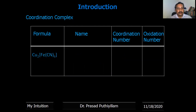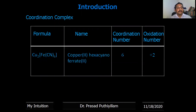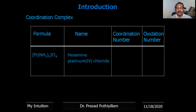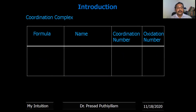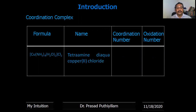Another example: [Pt(NH₃)₆]Cl₄, hexamine platinum(IV) chloride, with coordination number six and oxidation number four — the oxidation number of platinum here is +4. Next, [Cu(NH₃)₄(H₂O)₂]Cl₂ — tetramine diaqua copper(II) chloride — coordination number is six and oxidation number is +2.